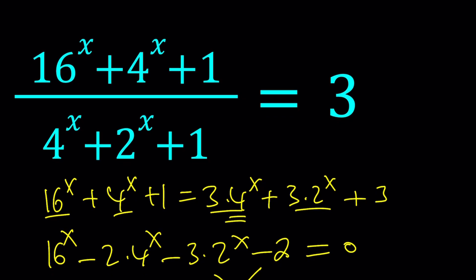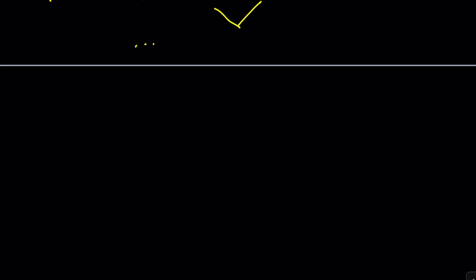We're going to look at the lowest base, which is 2 in this case, if you don't count the 1s. And we're going to call this something. How about calling this t? So t is equal to 2 to the power of x.